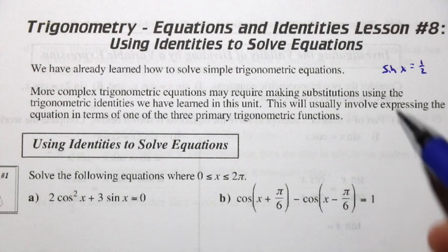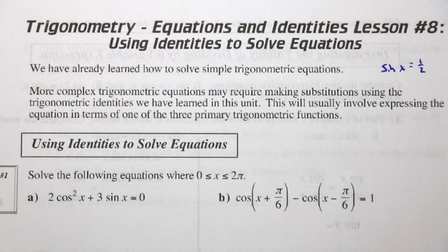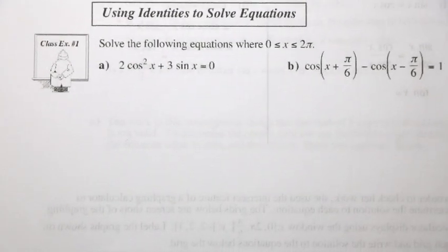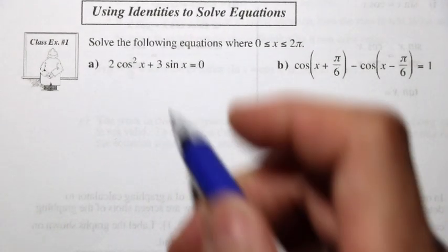This will usually involve expressing the equation in terms of one of the three primary trig functions — everything in terms of sine, cosine, or tangent. Let's take a look at class example 1 and try to use an identity to help us solve this equation.